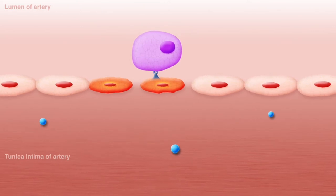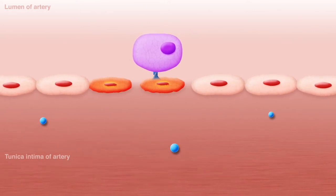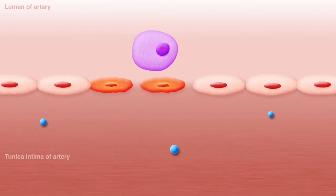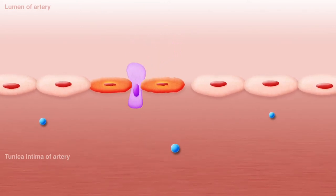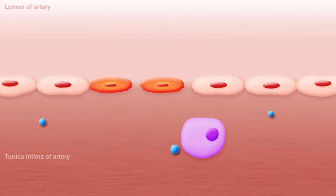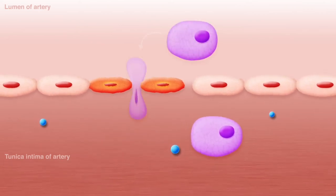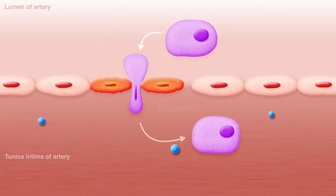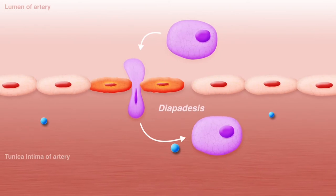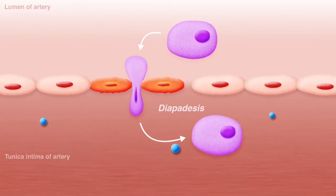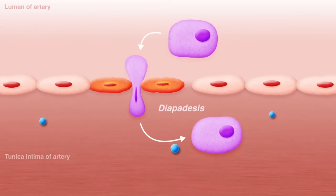These white blood cells undergo morphological changes that allow them to flatten and squeeze between endothelial cells. This movement of white blood cells out of the bloodstream is called diapedesis.